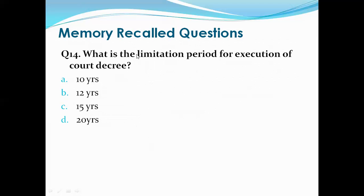Question 14: What is the limitation period for execution of a court decree? Options are: 10 years, 12 years, 15 years, 20 years. The right answer is B, that is 12 years. So the limitation period for the execution of a court decree is 12 years.